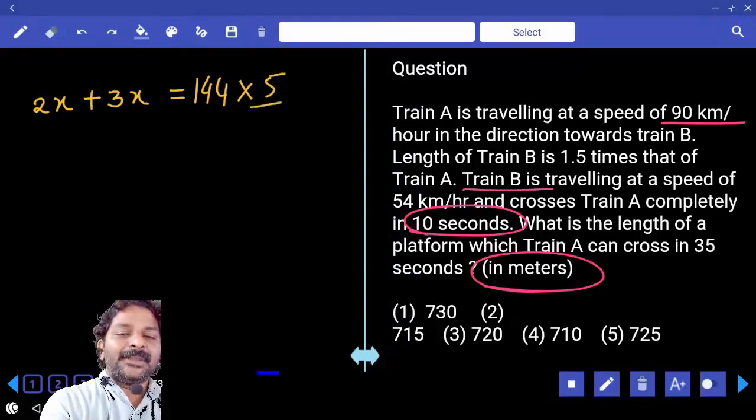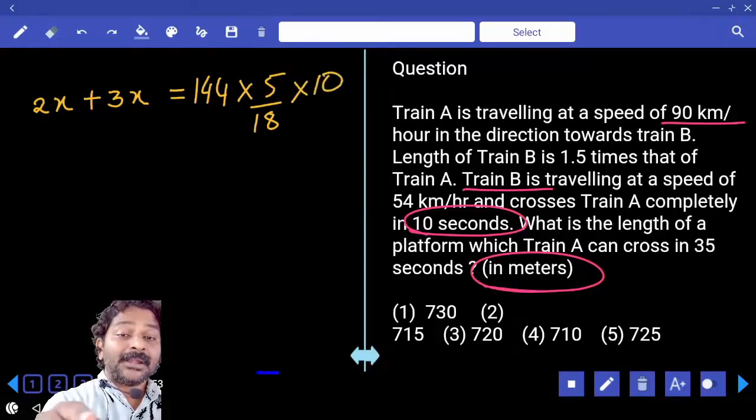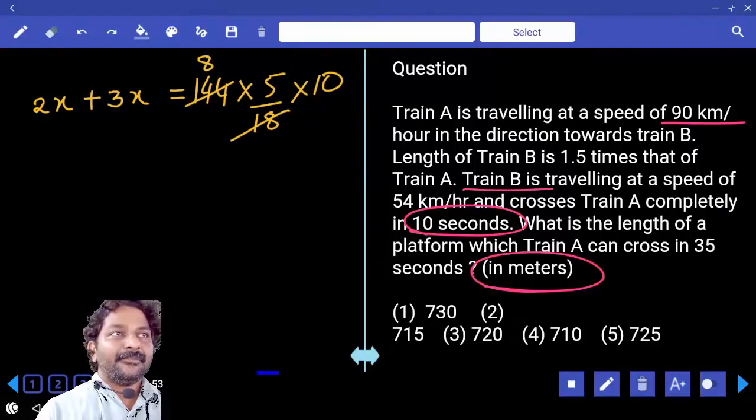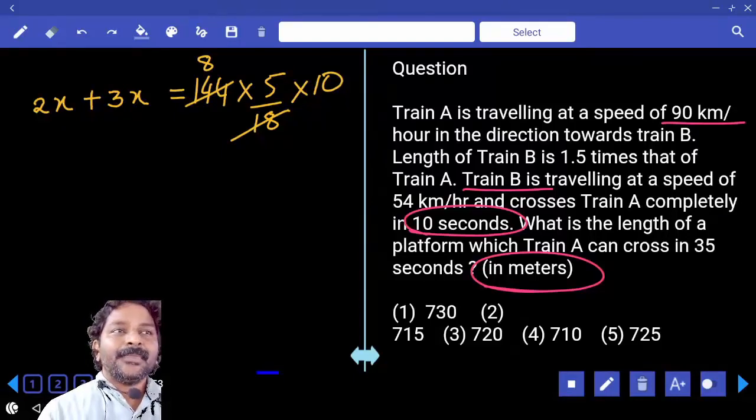Will convert kilometer per hour to meter per second. 18 into 5, 40 into 10, 400. 5x is equal to 400, x is equal to 80. Then 2x is equal to 160.